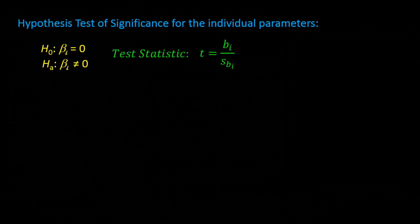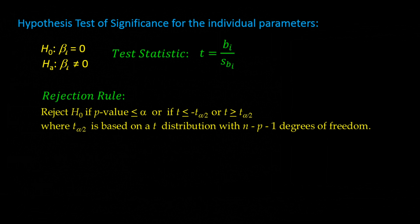Using the critical value approach, we would reject if the test statistic is in the rejection region, either above the positive critical value or below the negative critical value. We get the critical value from the t-table under alpha divided in half and degrees of freedom n minus p minus 1. For our example, n is 50, p is 3 independent variables, so degrees of freedom equals 50 minus 3 minus 1, which is 46. We define our alpha value as 0.05, so alpha divided by 2 is 0.025 and we look up the critical value under 46 degrees of freedom.